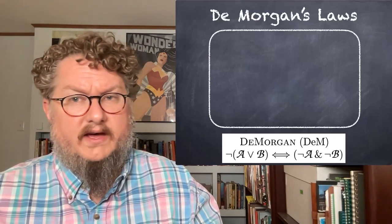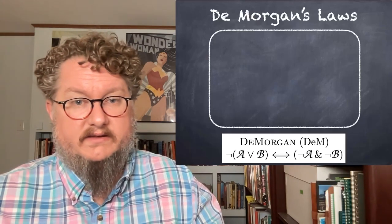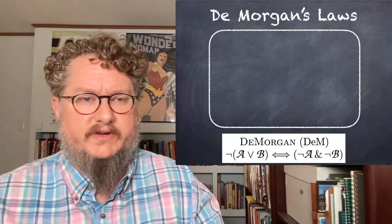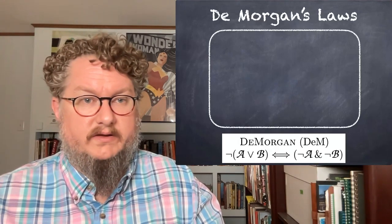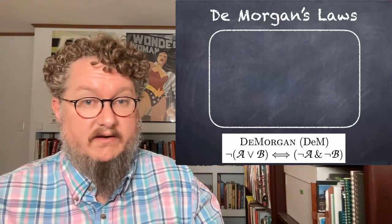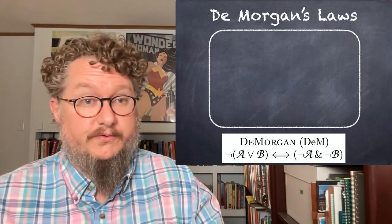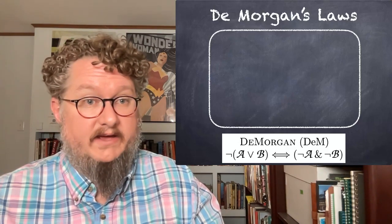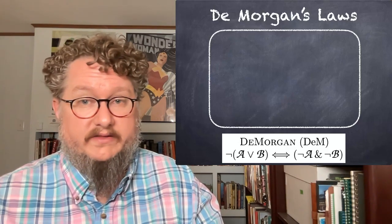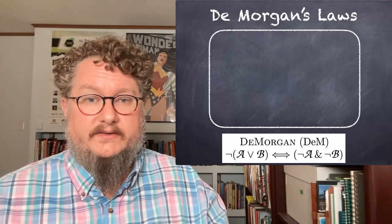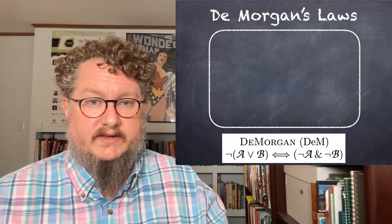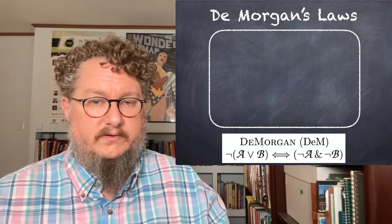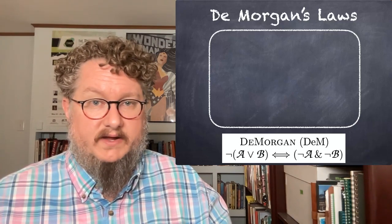Just to give you a sense of how we might justify some of these replacement rules, there's many different approaches. You can do it with a kind of meta-language derivation. You can do it with truth tables. I can show you with some Venn diagrams how we would do it for DeMorgan's law here. So let's take this version. The negation of A or B is equivalent to not A and not B.